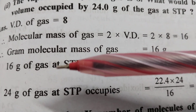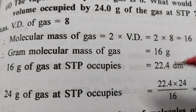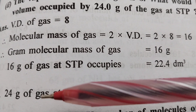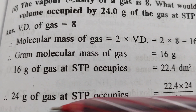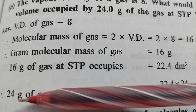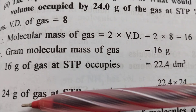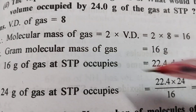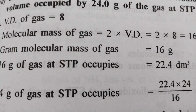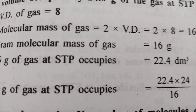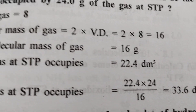The standard molar volume at STP is 22.4. For 24 grams of gas at STP, since 16 grams occupies 22.4 dm³, the volume for 24 grams is 22.4 into 24 by 16, which is equal to 33.6 decimetre cube.